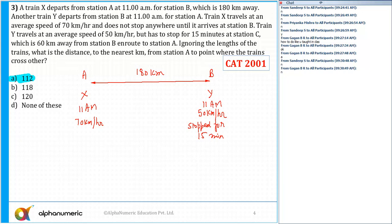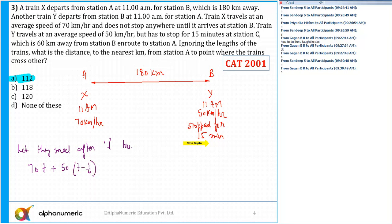If they are meeting after T hours, train X has traveled for T hours, so the total distance traveled by train X is 70T. The second train has traveled for T minus 15 minutes, which is T minus 1/4 hours, at a speed of 50, so that is 50 into (T minus 1/4).